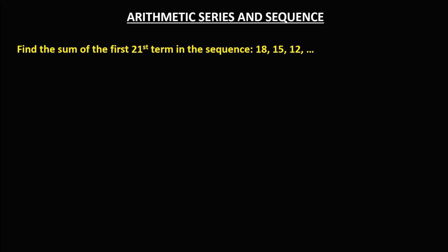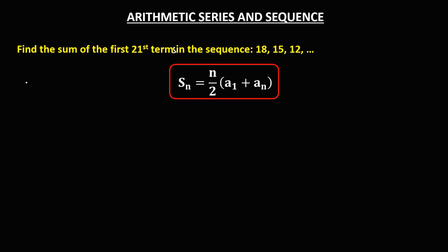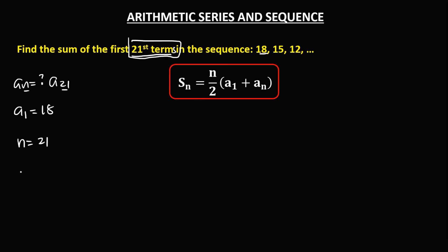For this problem, find the sum of the first 21 terms in the sequence. Since there's no given last term, we need to find a sub 21 first. The first term is 18, n equals 21, and the common difference is a sub 2 minus a sub 1: that's 15 minus 18, so d equals negative 3.